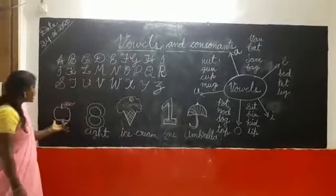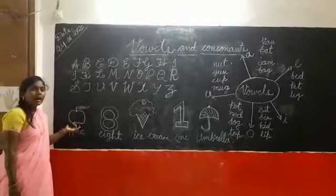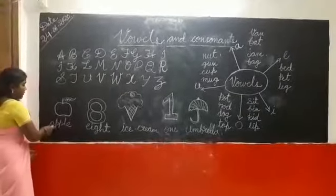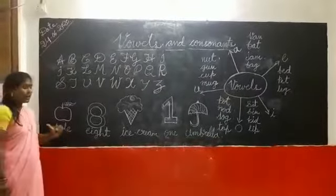And what is this picture children? Apple. Yes. What is the spelling of Apple? A-P-P-L-E. Apple. And what is the first letter here? A.